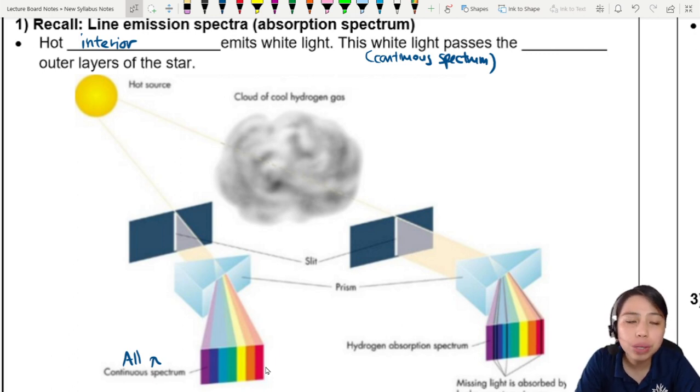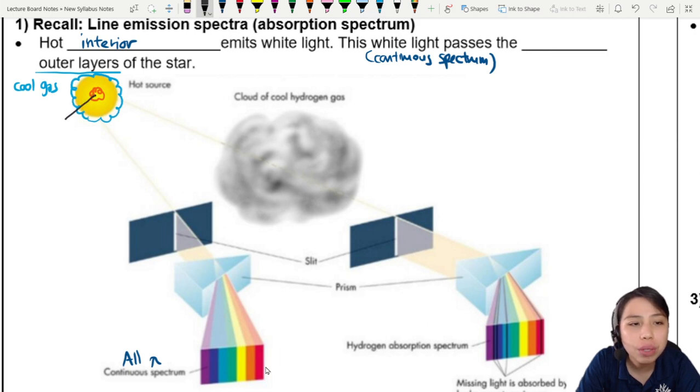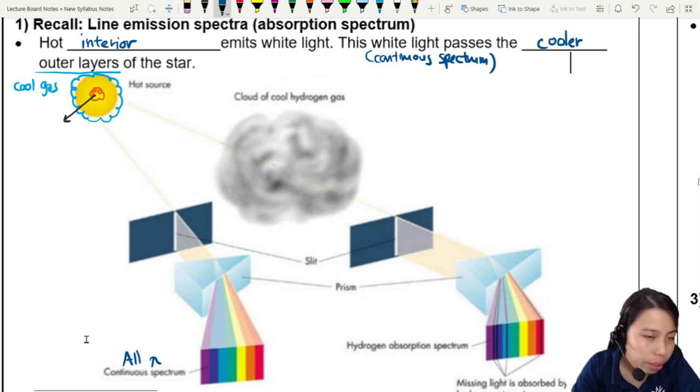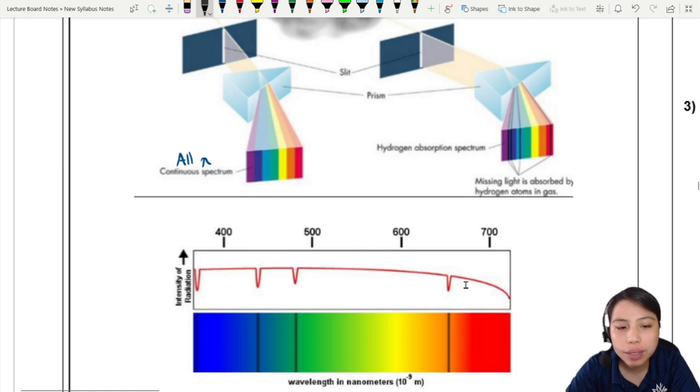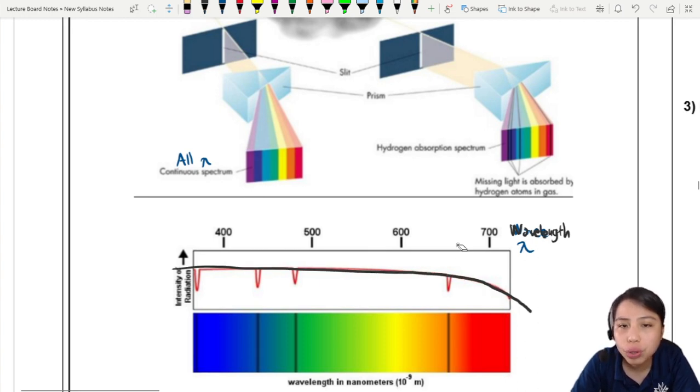This white light will pass through the outer layers of the star. The outer layers are what we call cooler gas. Very hot middle and outer there's more cooling-ish kind of gas. Whatever light is released from the middle has to pass through all these layers of gas. If you didn't have that layer of cool gas, you would have continuous spectrum.